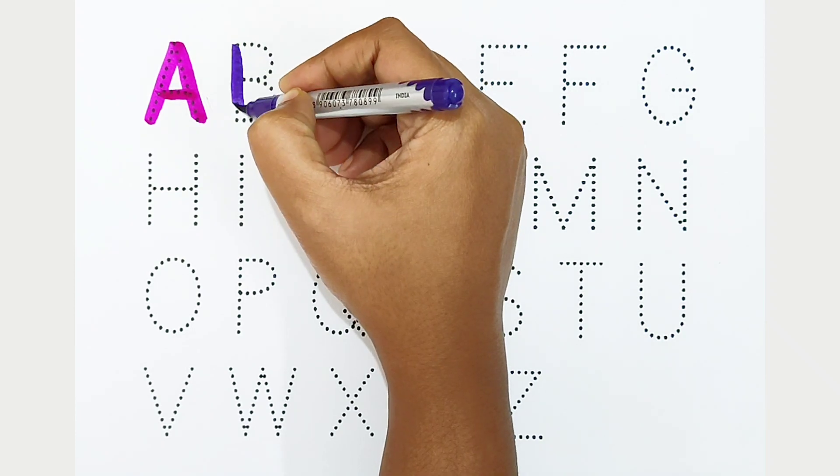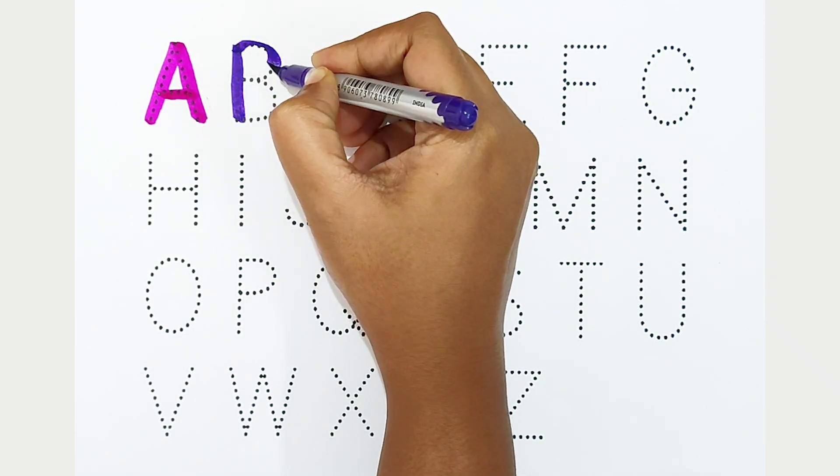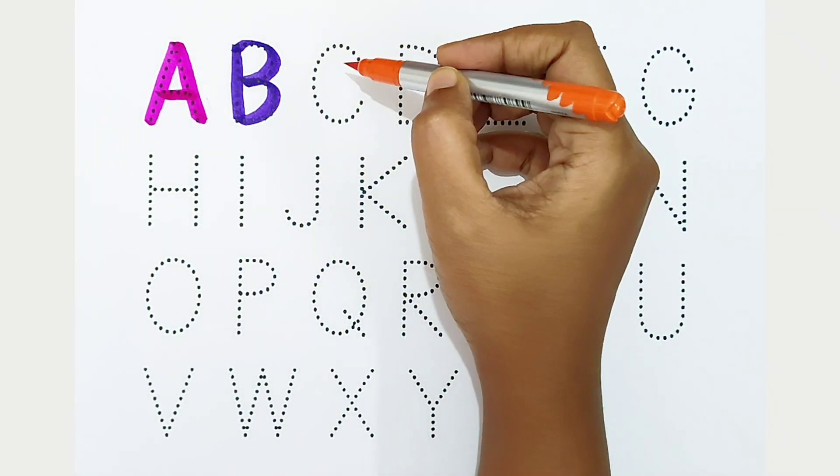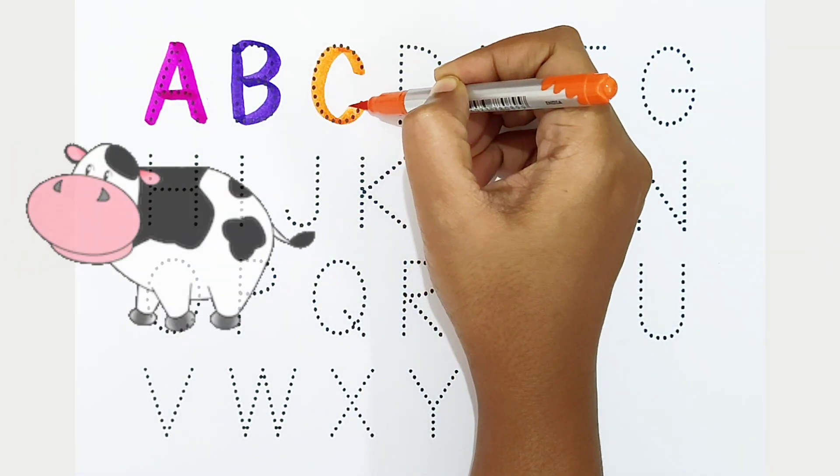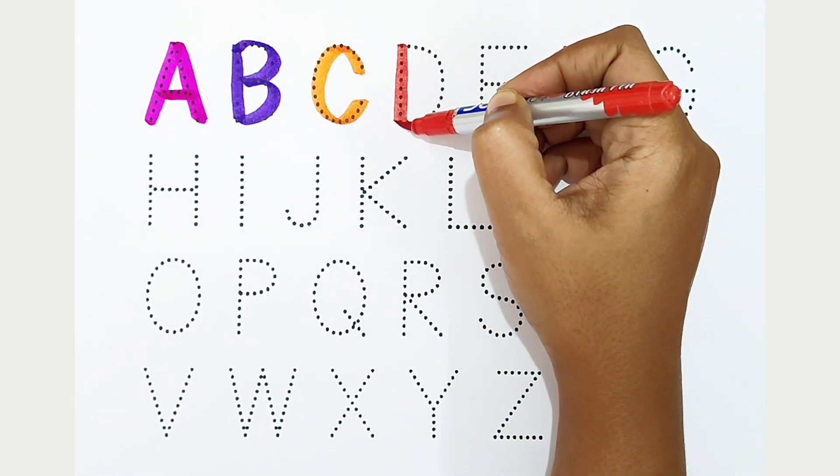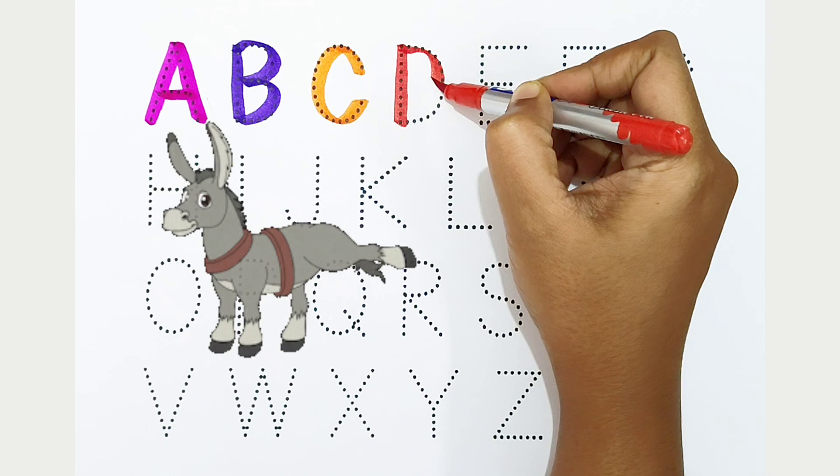B is for bat. C, orange color, C is for cow. D, red color, D is for donkey.